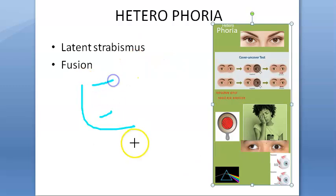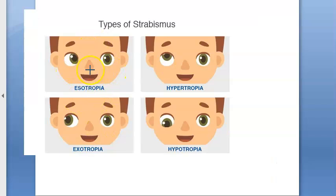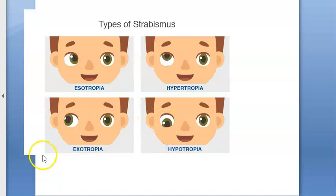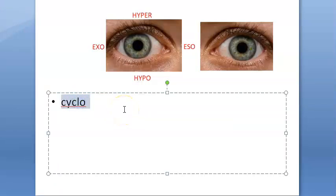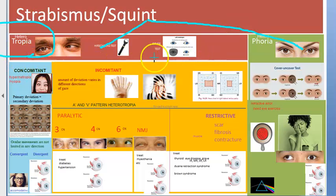Under heterophoria there are many types: esophoria, exophoria, hyperphoria, and cyclophoria. If it is apparent only when the fusion force is removed, it will be called esophoria, hyperphoria, exophoria, or hypophoria. In addition, there is cyclophoria — a torsional deviation, a tendency of the eyeball to rotate around the anteroposterior axis. Inside this there is incyclophoria and excyclophoria.